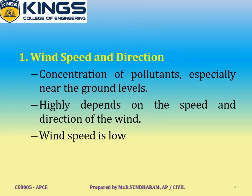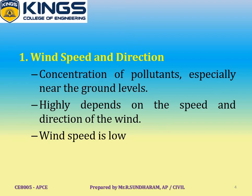First, wind speed and direction. The speed and direction of wind changes the concentration of pollutants, especially near the ground level. High wind speed carries away the pollutants at or near the point of emissions. The emitted air pollutants easily get diluted with a high volume of atmospheric air, but the speed of dilution highly depends on the speed and direction of the wind.